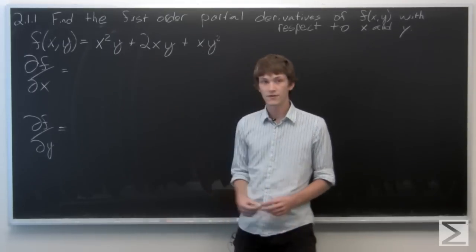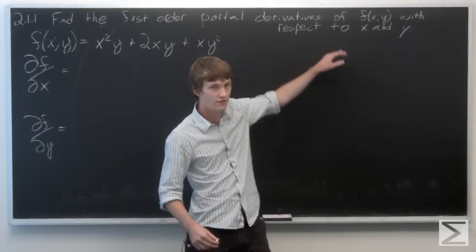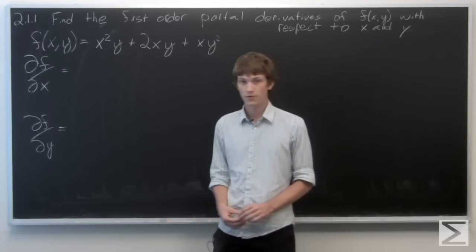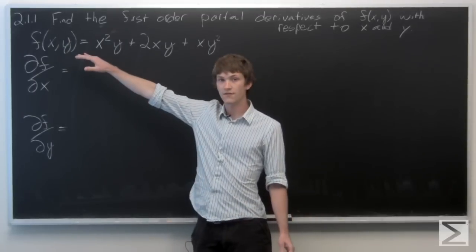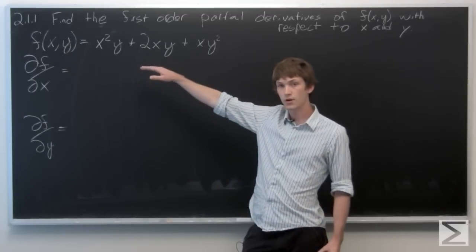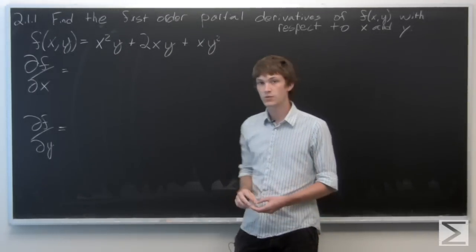OK, in this problem we're asked to find the first order partial derivatives of the given function f with respect to both x and y. And we see that our function f is x²y + 2xy + xy².